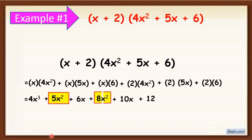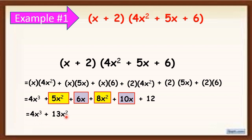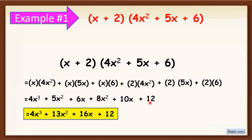Now, combine similar terms. As you can see, 5x squared and 8x squared are similar terms, and 6x and 10x are also similar terms. So, the final answer is 4x cubed plus 13x squared — because we combine 5x squared and 8x squared — plus 16x, because of 6x plus 10x, plus 12. This will be our final answer: 4x cubed plus 13x squared plus 16x plus 12.